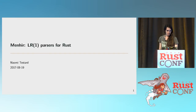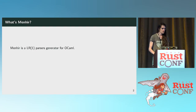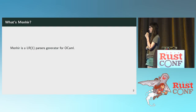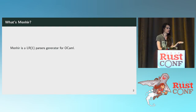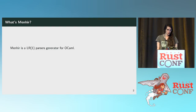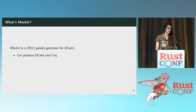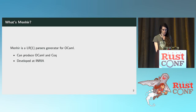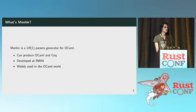So let's start at the beginning. What is Menhir? Menhir is an LR parser generator which was initially designed for OCaml — written in OCaml to produce OCaml parsers. It can also produce Coq parsers. It's developed at the INRIA, which is a French national research institute where I work, and it's very widely used in the OCaml world.